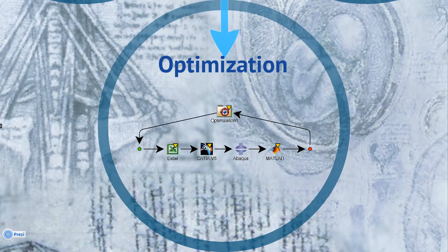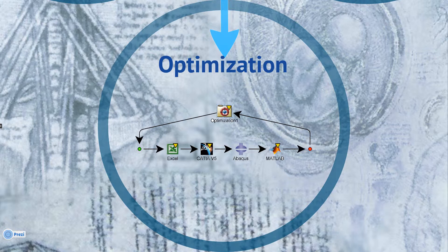Automation of repetitive tasks can be programmed to speed up and improve data integrity. Geometry can be updated and passed to the simulation, solved, and optimized.